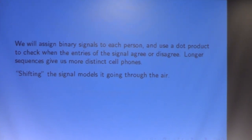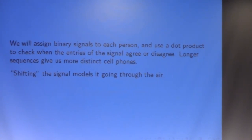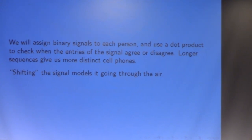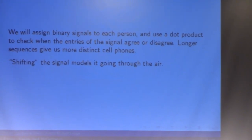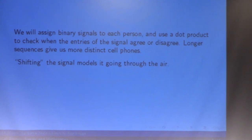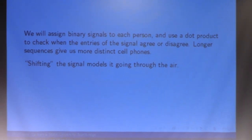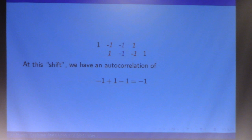We're going to assign binary signals to each person and use a dot product to check when the entries of the signals agree or disagree. Longer sequences give us more distinct cell phones, so those are beneficial. And shifting the signal is going to model it kind of going through the air like this.